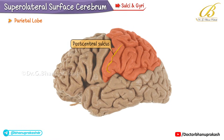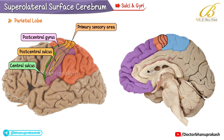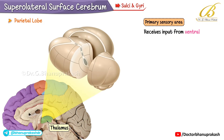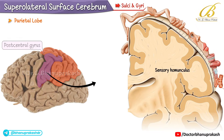In the parietal lobe, the post-central sulcus runs parallel to and posterior to the central sulcus. The post-central gyrus, lying between these two sulci, contains the primary sensory area (Brodmann areas 3, 1, and 2). This extends medially up to the paracentral lobule, receives input from the ventral posterior nuclei of the thalamus, and interprets touch, pain, temperature, and proprioceptive impulses. The sensory homunculus represents a topographic map of body parts within the post-central gyrus, similarly to the motor homunculus, with higher sensitivity areas represented larger, progressing from medially to laterally.